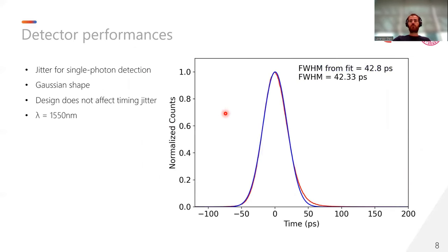Another important feature of parallel SNSPDs is their timing jitter. As you can see, parallel SNSPDs are able to keep the Gaussian shape and the full width at half maximum remains in the tens of picoseconds, showing how our design does not affect entirely the jitter.